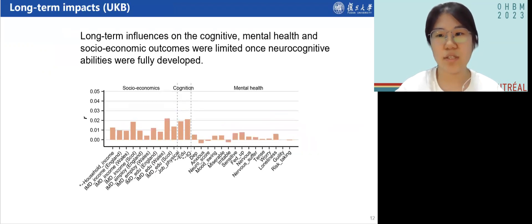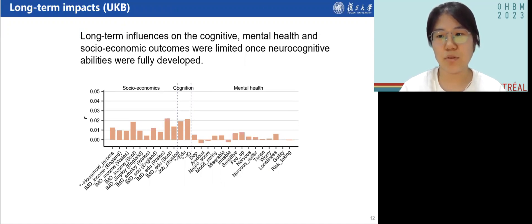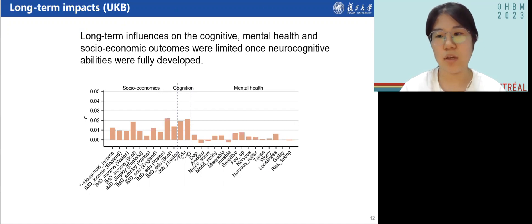To test whether and to what degree delayed neural development during adolescence could impact long-term outcomes, we calculated the PRS and CNPW score using group 3 GWAS results for UKB participants and correlated them with outcomes of interest. We conducted non-superiority tests of the correlation coefficients and found that these correlations were all smaller than 0.05, indicating that long-term influences on cognitive, mental health, and socioeconomic outcomes were limited once neurocognitive abilities were fully developed.